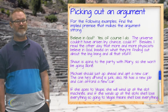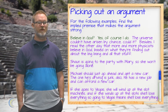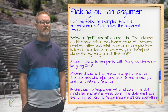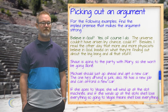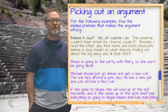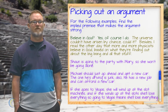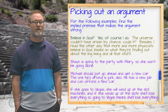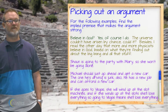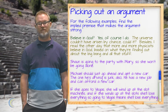The conclusion is that God exists and there are two premises. The first premise is that the universe couldn't have arisen by chance. The second premise is that more and more physicists believe in God. So you have the conclusion that God exists, supported by those two premises.